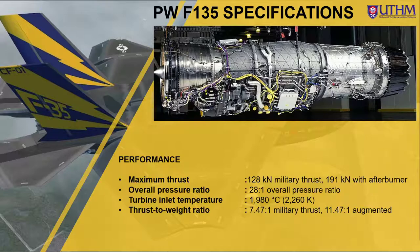For its performance, it can produce 128 kilonewtons of maximum military thrust — military thrust meaning maximum thrust without the afterburner — and 191 kilonewtons of maximum thrust with its afterburner on. It has an overall pressure ratio of 28 to 1 and a turbine inlet temperature of 1,980 degrees Celsius, or 2,260 Kelvin.